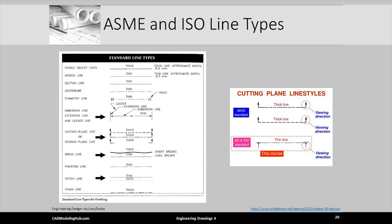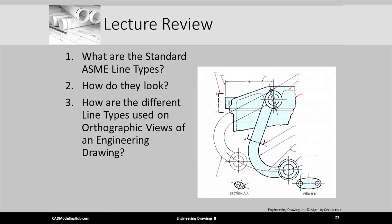This brings us to the end of our discussion on standard line types. Let's take a few minutes and review some key takeaways. What are the 15 standard line types as defined by ASME? As you look at the figure on the right, you should be able to name each of the lines being pointed at by the red leaders.